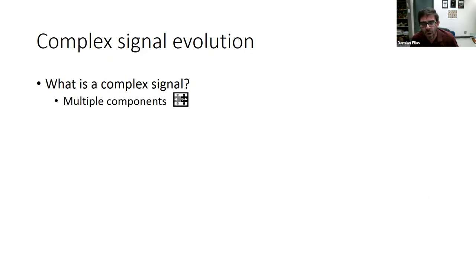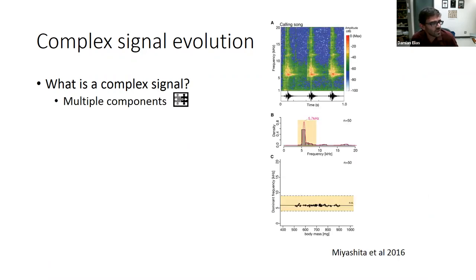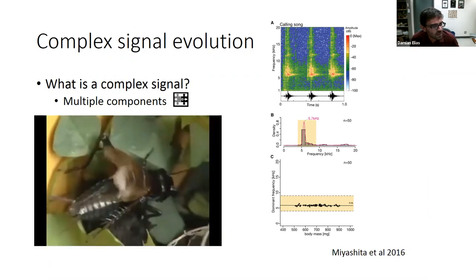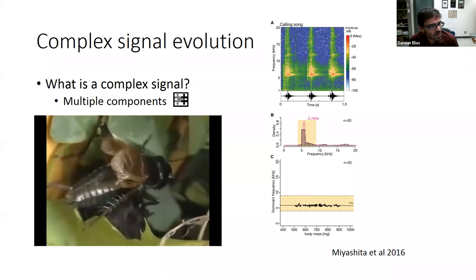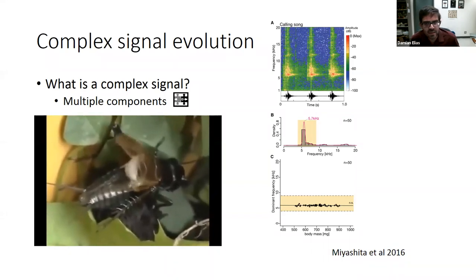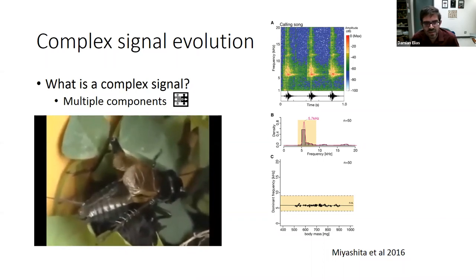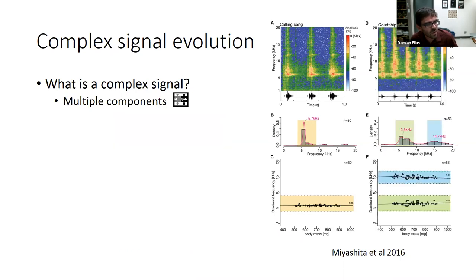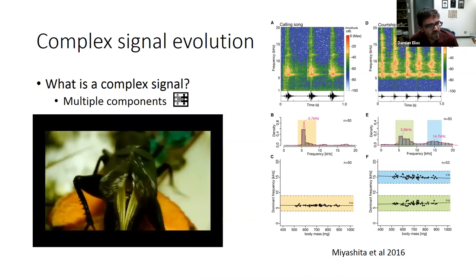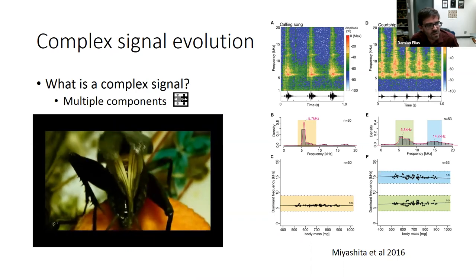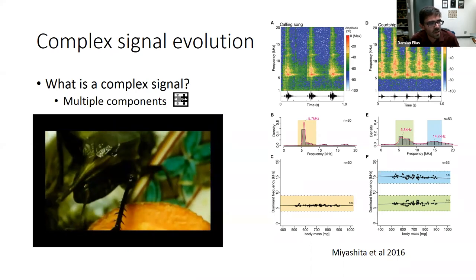First, you can think about a signal as having multiple components. A very simple version is thinking about a cricket — crickets have a particular calling song with a very particular carrier frequency repeated over and over. That signal has relatively few components. If you contrast it with a courtship song, you have a much different type of information: multiple frequency peaks, modulations, and it's much more complex. So you can think about complex signal evolution as happening when some signals have more parts than others.